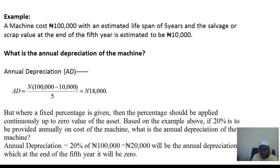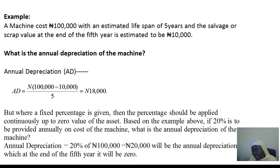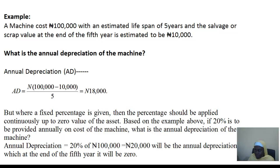Where an asset has a salvage value — for example, a machinery or motor vehicle costing 100,000 with a salvage or scrap value of 10,000 — before computing depreciation, you subtract that salvage value from the cost: 100,000 minus 10,000 gives you 90,000. Then you divide it by the lifespan, which could be 2, 3, 4, 5, or even 10 years, to get the depreciation for that particular asset.